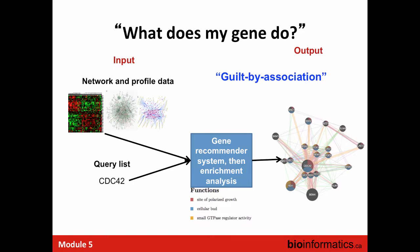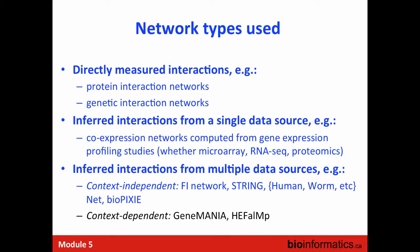Gene recommender systems like GeneMANIA, STRING, and others can tell you this information using all the networks I've referred to. We and other groups maintain large network databases so you just type your gene name and choose which networks you're interested in. One rarer feature we provide is what I'll call a context-dependent network.